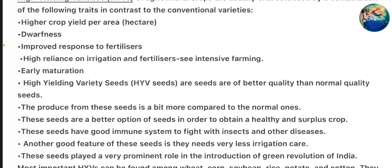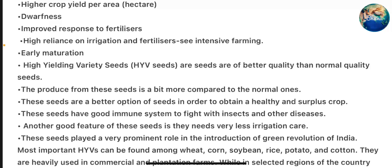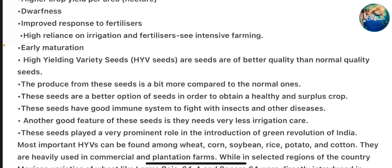Characteristics include higher crop yield per area per hectare, roughness, improved response to fertilizers, high reliance on irrigation and fertilizers, capital-intensive farming, and early maturation. High yielding variety seeds are of better quality than normal quality seeds. The produce from these seeds is a bit more compared to the normal ones.